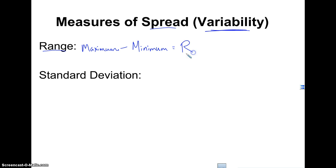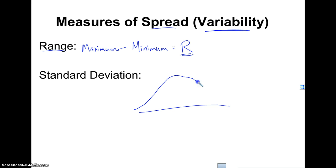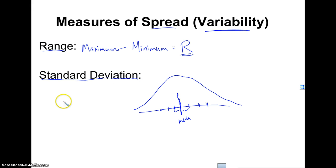So we'd say the range is 20, but we want to make sure when describing it in context that we explain what 20 means. The standard deviation measures variability relative to the average — how far away, on average, a piece of data is from the mean.